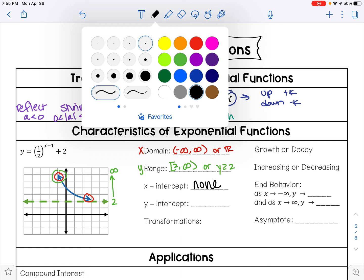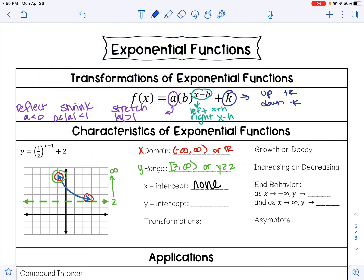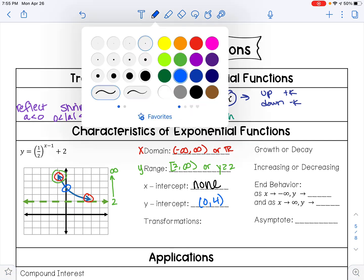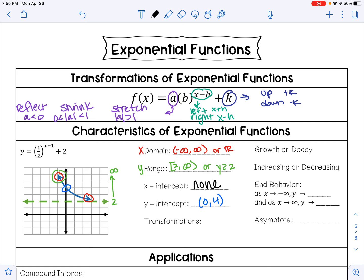Your y-intercept is where your exponential curve crosses your y-axis. That's right here at the point (0, 4). As for my transformations, I have x minus 1 for my exponent, which tells me that this went right 1 unit, and then I also have this plus 2 for my k value, so that tells me that we went up 2 units.